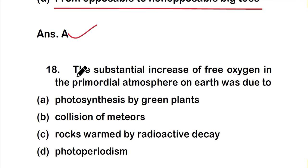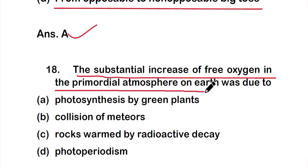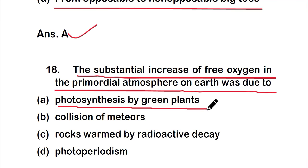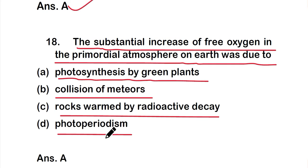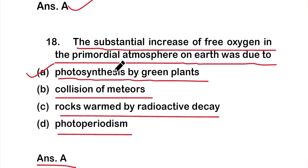Question 18: The substantial increase of free oxygen in the primordial atmosphere on Earth was due to — option A: photosynthesis by green plants, option B: collision of materials, option C: rocks warmed by radioactive decay, or option D: photoperiodism. The correct answer is option A — photosynthesis by green plants. The substantial increase of free oxygen in the primordial atmosphere on Earth was due to photosynthesis by green plants.